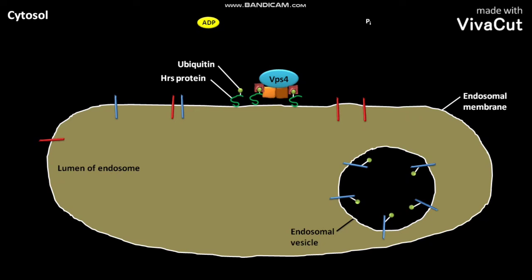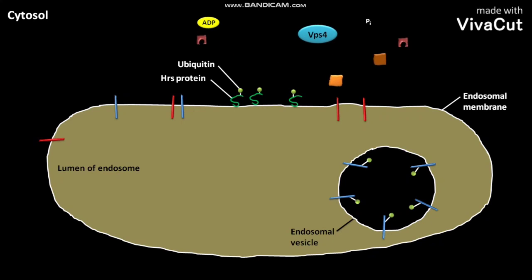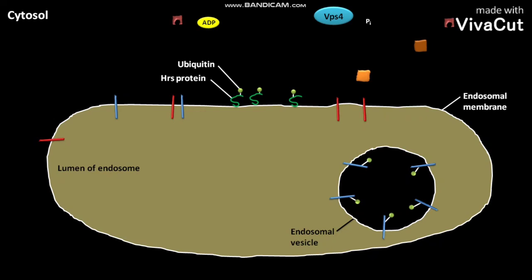As a result, the ESCRT disassembles along with the release of VPS4. The ESCRT and VPS4 then return to the cytosol.